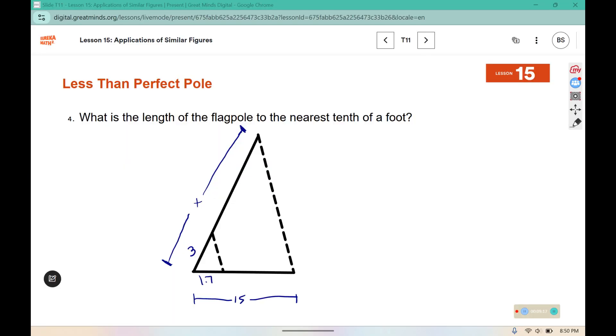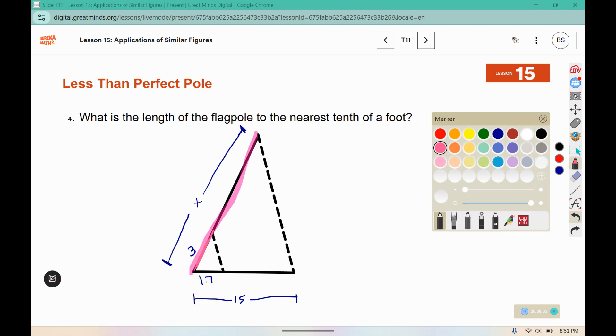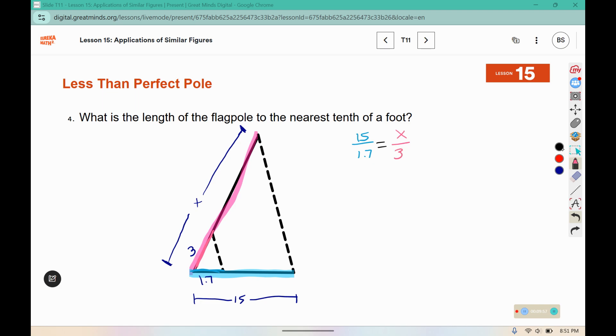This one asks for the length of the flagpole to the nearest tenth of a foot, so we're going to pair up this longest part of the flagpole with the little part where the mechanism is, and then we're going to compare it to the shadow length versus the shadow for that little mechanism piece, so we have 15 over 1.7 equals x over 3. Cross multiply, and divide by 1.7, and we are rounding to the nearest tenth of a foot, and that is 26.5 feet.